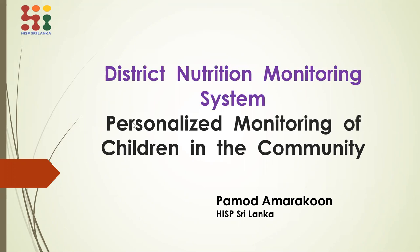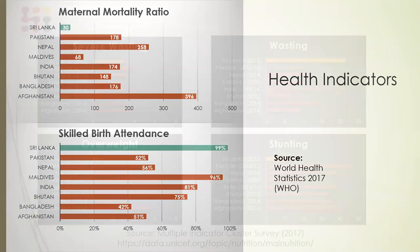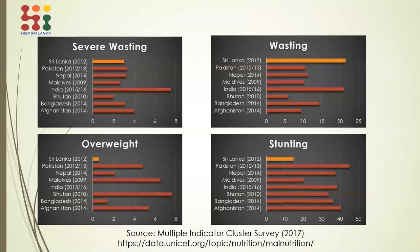A little bit of background about the use case. When it comes to the South Asia region, Sri Lanka generally has very good public health indicators compared to other countries. But one issue Sri Lanka has been struggling with over the last two decades involves a few indicators related to nutrition — severe wasting, wasting, overweight, and stunting — where we do not have the same advantage over other countries.